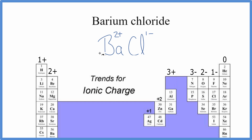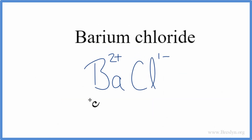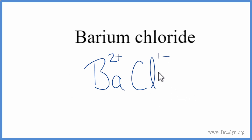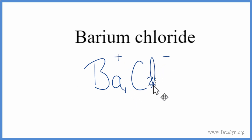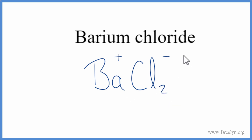These charges need to add up to zero — they need a net charge of zero — which they don't right now; we have a +2 and a −1. We can change the subscripts to get the charges to balance using the crisscross method: take the 1 and put it as the subscript for barium, and the 2 and put it as the subscript for chlorine. By convention, we don't write the 1.